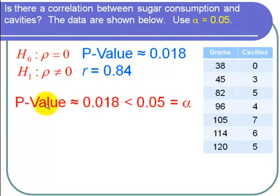In particular, the p-value, which is about 0.018, is less than the level of significance 0.05, which is equal to alpha.